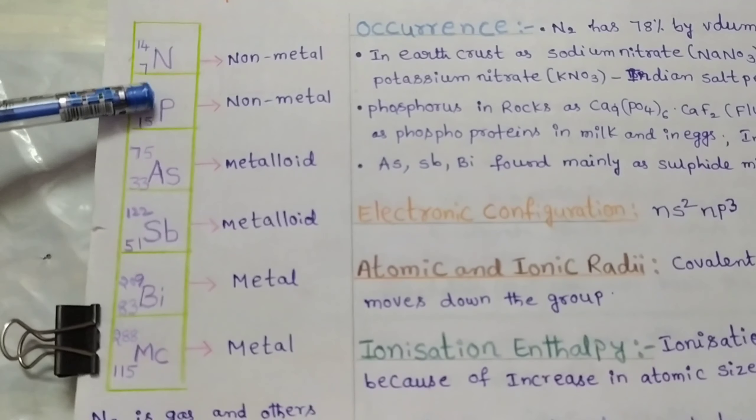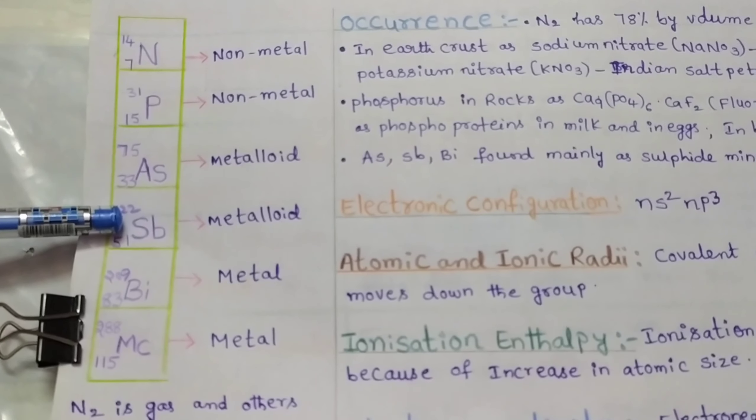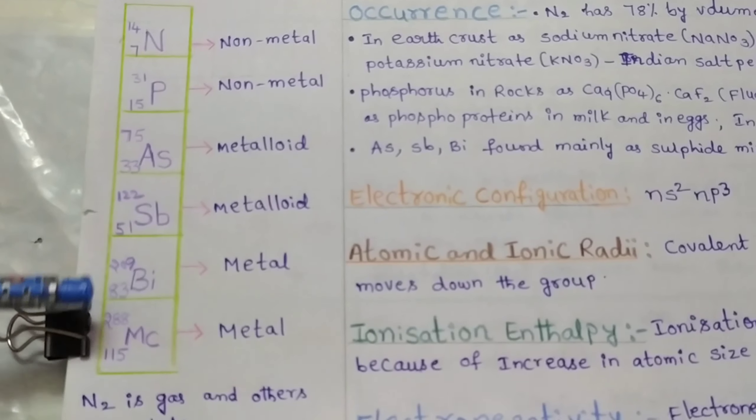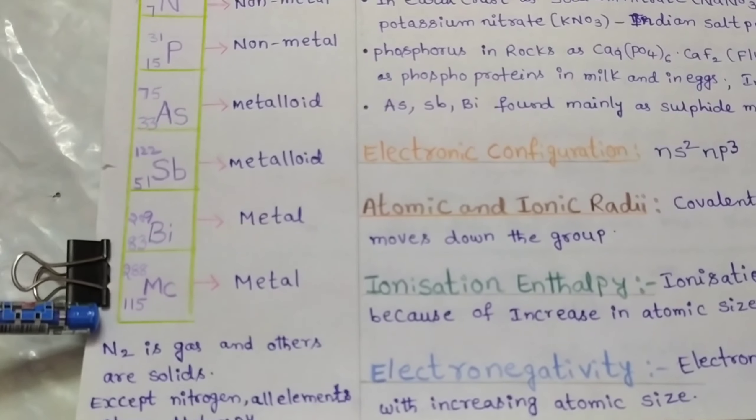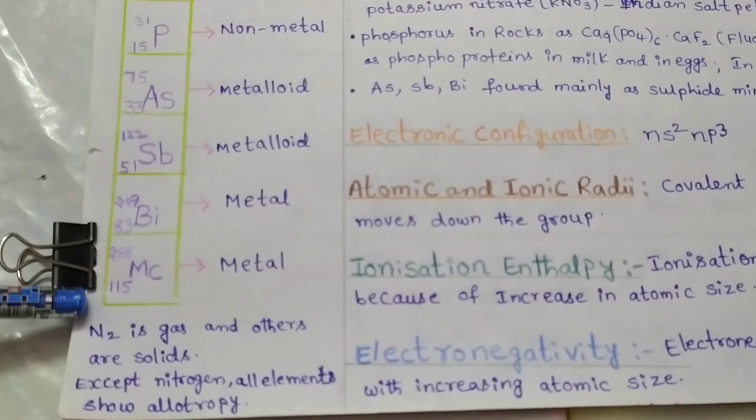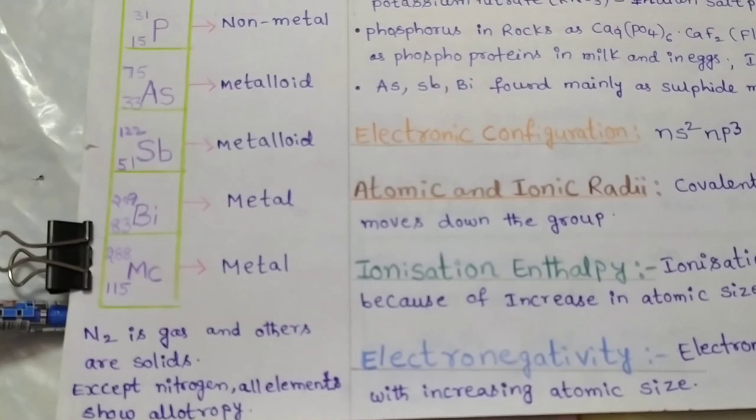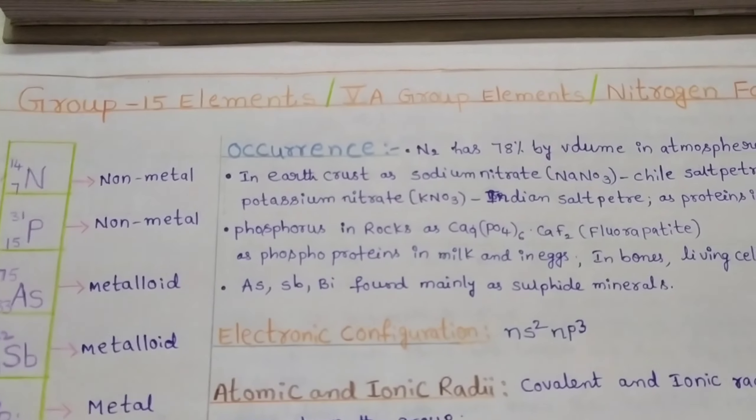Here nitrogen and phosphorus are non-metals. Arsenic and antimony are metalloids. Bismuth and moscovium are metals. Nitrogen exists as gas and all others exist in the form of solids. Except nitrogen, all other elements show allotropy.